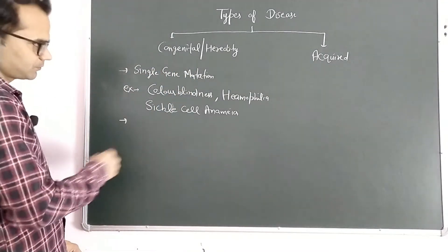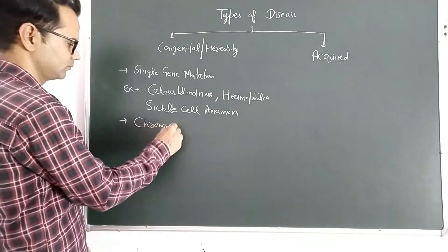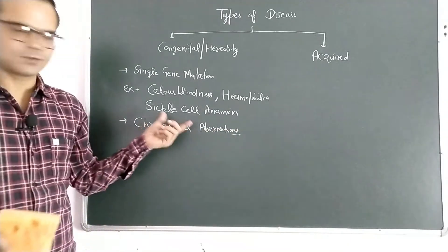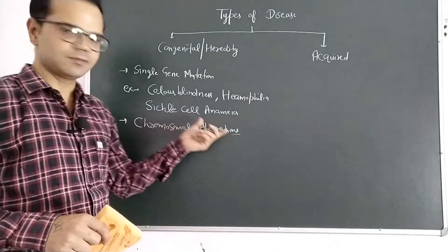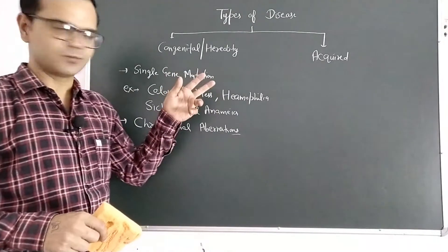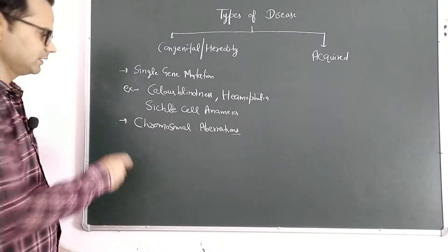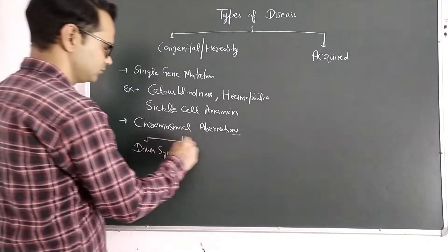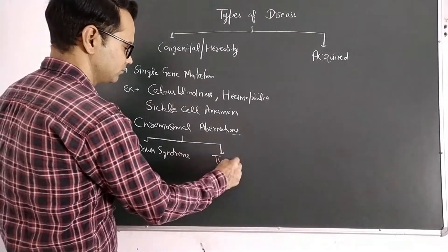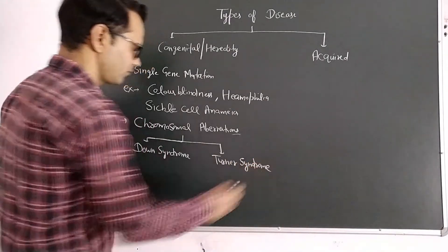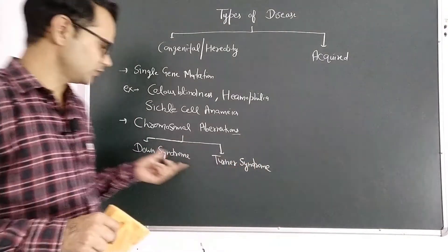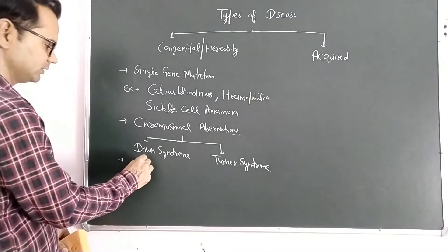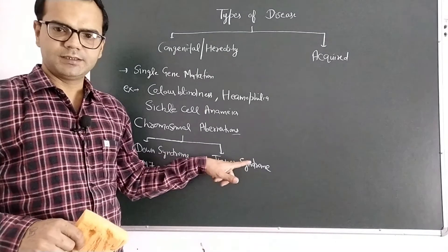The second responsible factor is chromosomal aberrations. Chromosomal aberrations means there is a decrease or increase in the number of chromosomes, which can also cause disease. Two important examples are Down syndrome and Turner syndrome. In Down syndrome, also called trisomy, there is the presence of one extra chromosome.